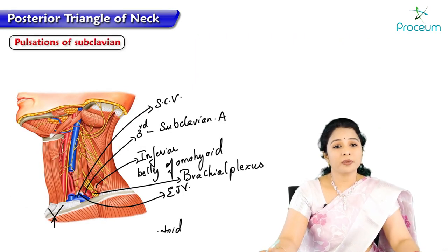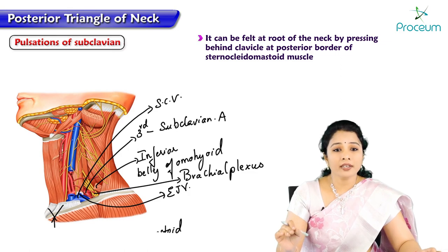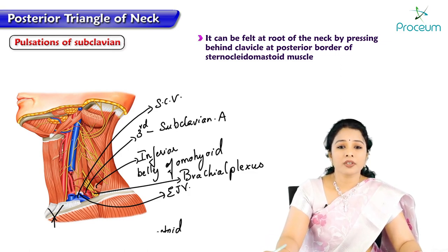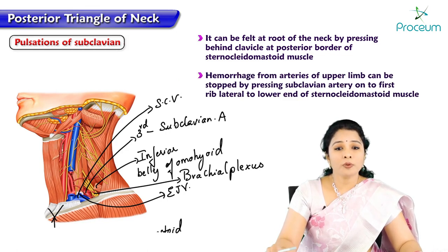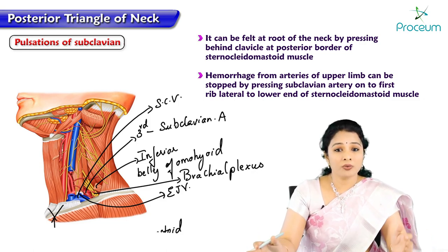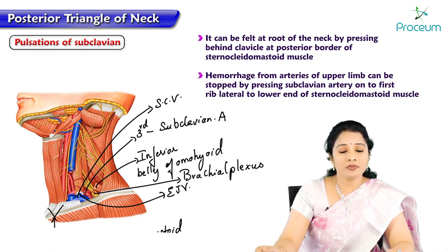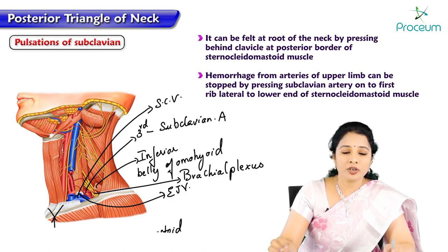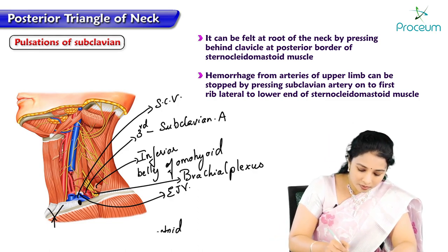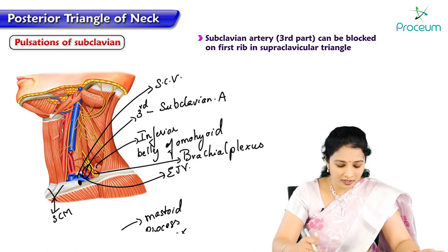Subclavian artery pulsations can be felt at the root of the neck by pressing behind the clavicle at the posterior border of sternocleidomastoid. Hemorrhage from arteries of the upper limb can be stopped by pressing the subclavian artery onto the first rib, lateral to the lower end of the sternocleidomastoid muscle, in the subclavian triangle.